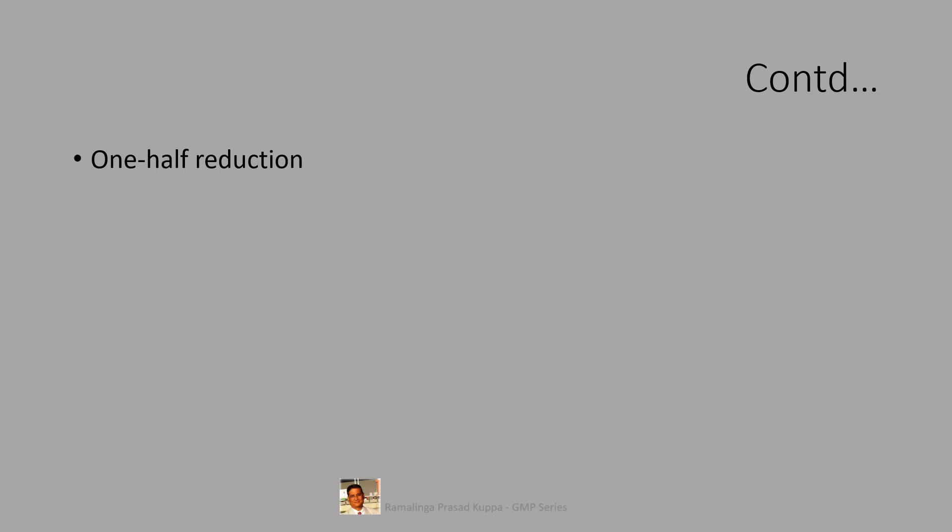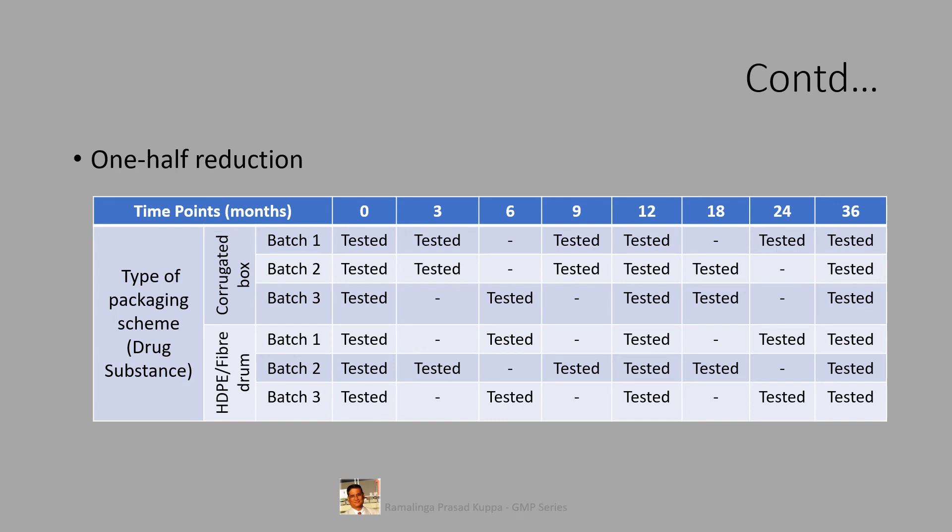Let us see the example of one half reduction for APIs. So for APIs, the one half reduction may be designed like this. Since there is less probability of several strengths of APIs, the least protected corrugated boxes and the most protected HTP containers are selected for bracketing. Testing strategy is similar to the drug product design that was discussed in the earlier slide.